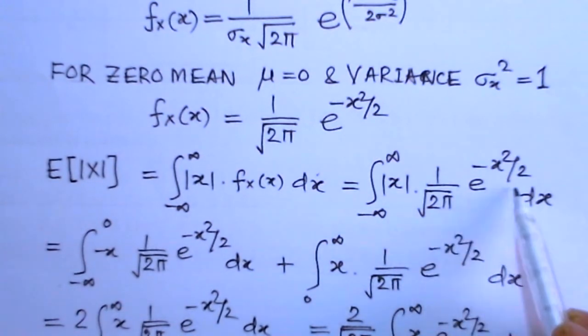Modulus of x, 1 over root 2 pi, e to the power minus x squared over 2 dx. Now this integral is broken into two integrals. That is minus infinity to 0, and here because it was mod x, the negative part is included, that is minus x. Plus this integral is from 0 to infinity.